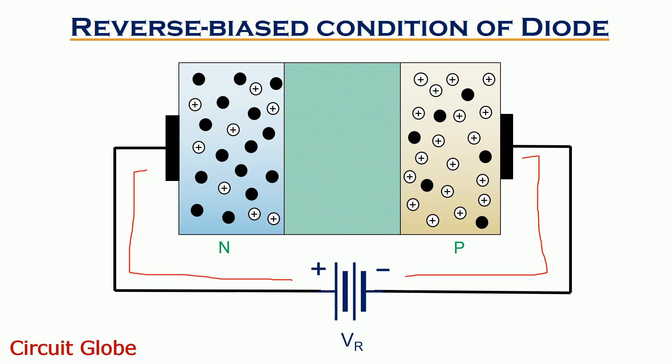In reverse biased condition, flow of current is almost negligible. However, a small saturation current flows through the diode that is also known as reverse saturation current. Let us see how this happens.